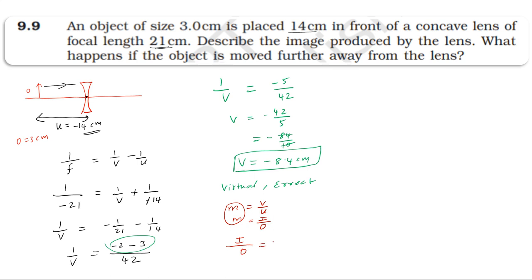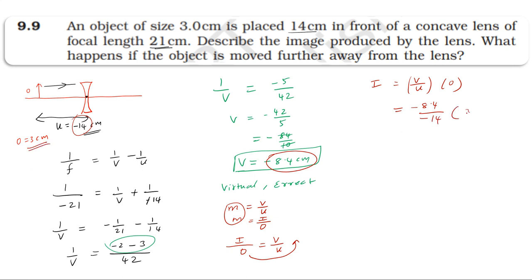Image size equals image distance divided by object distance, multiplied by object size. Image distance is minus 8.4 cm, object distance is minus 14 cm, object size is 3 cm. The negatives cancel, so image size equals 1.8 cm.